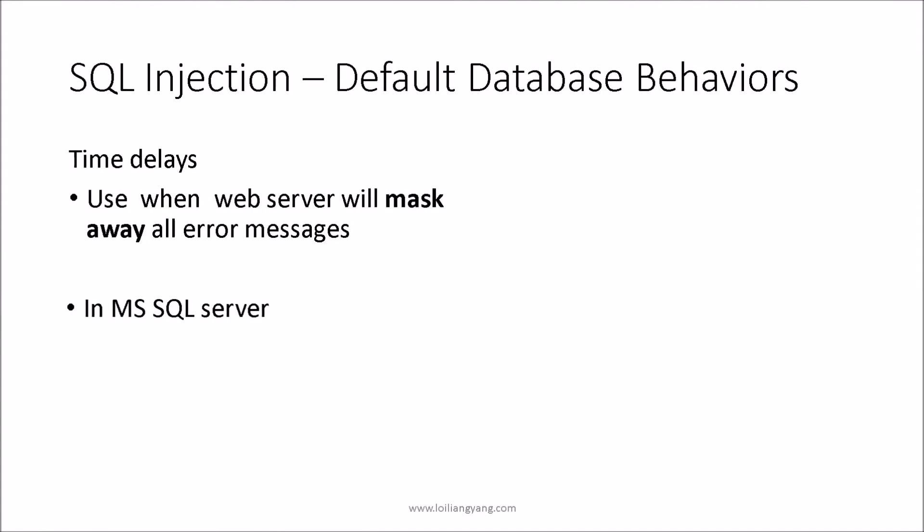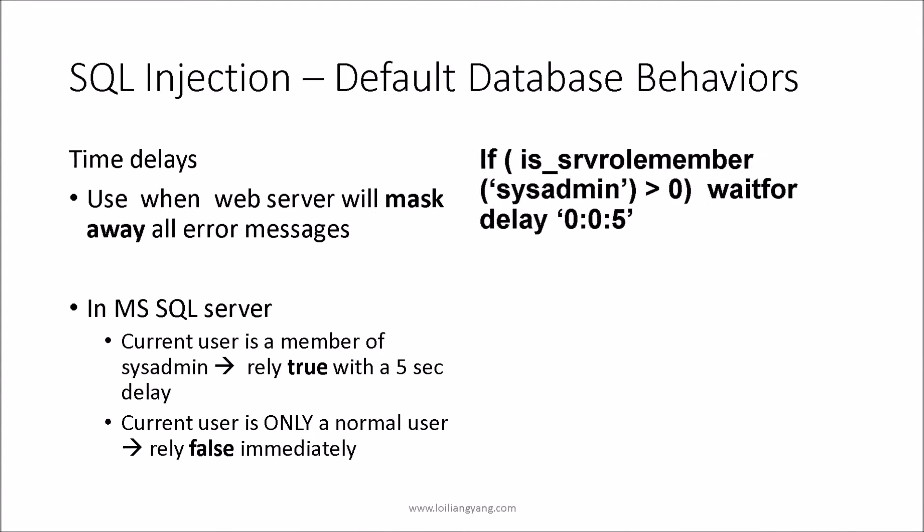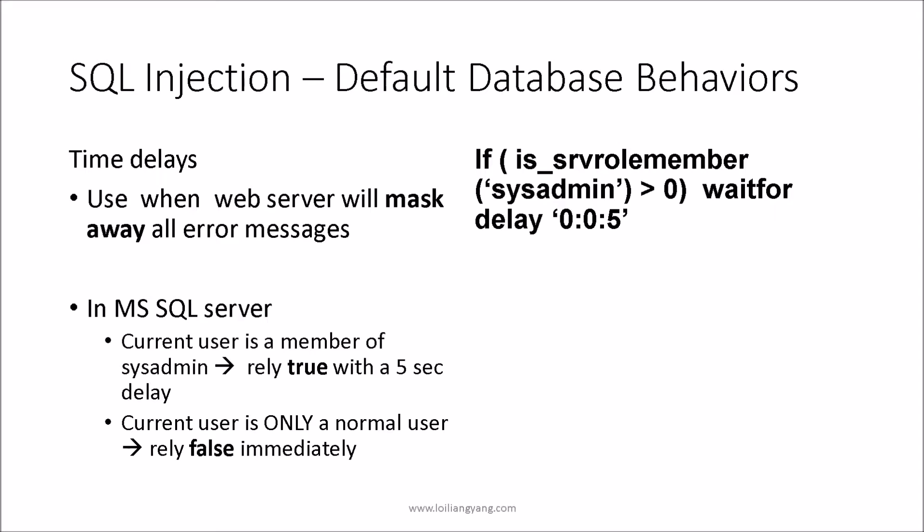We can also watch for default database behaviors that are usually left untouched by database administrators, as these help us uncover more information about the database architecture. At the same time, we look into further advanced SQL exploits to check user rights on the database system. For example, in Microsoft SQL Server, the WAITFOR DELAY statement causes SQL Server to pause for a specified period of time, and this feature can be leveraged to reveal information such as whether the web application's connection to the database is made as a system administrator.